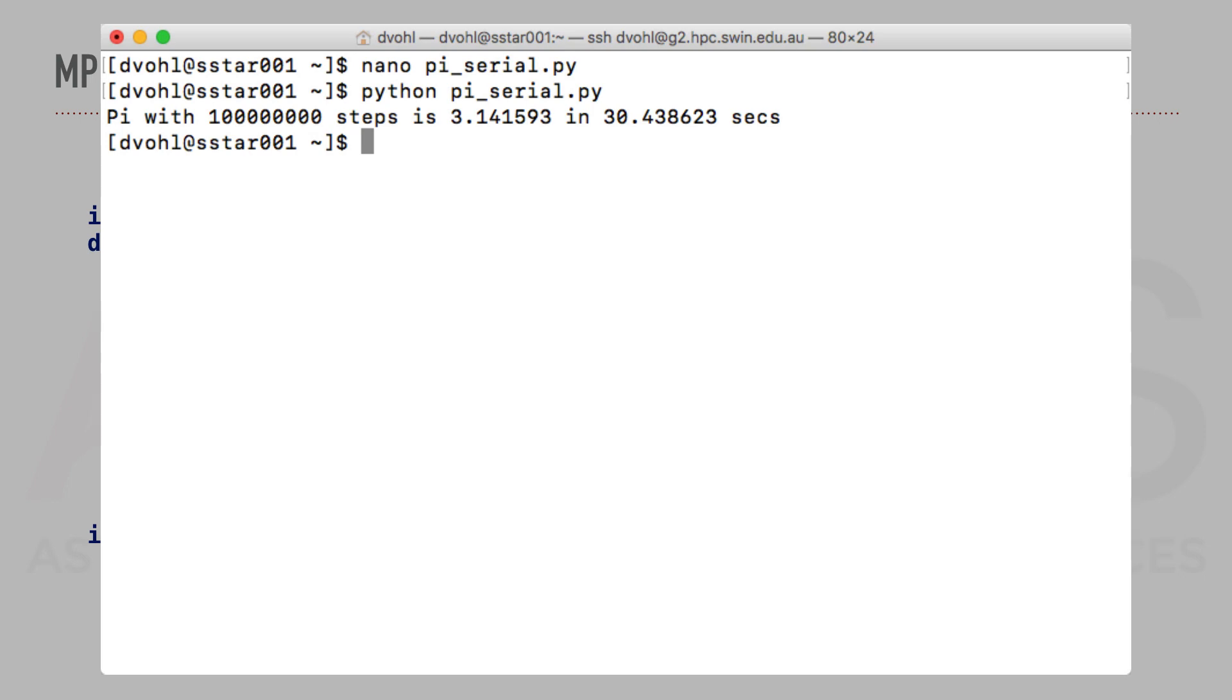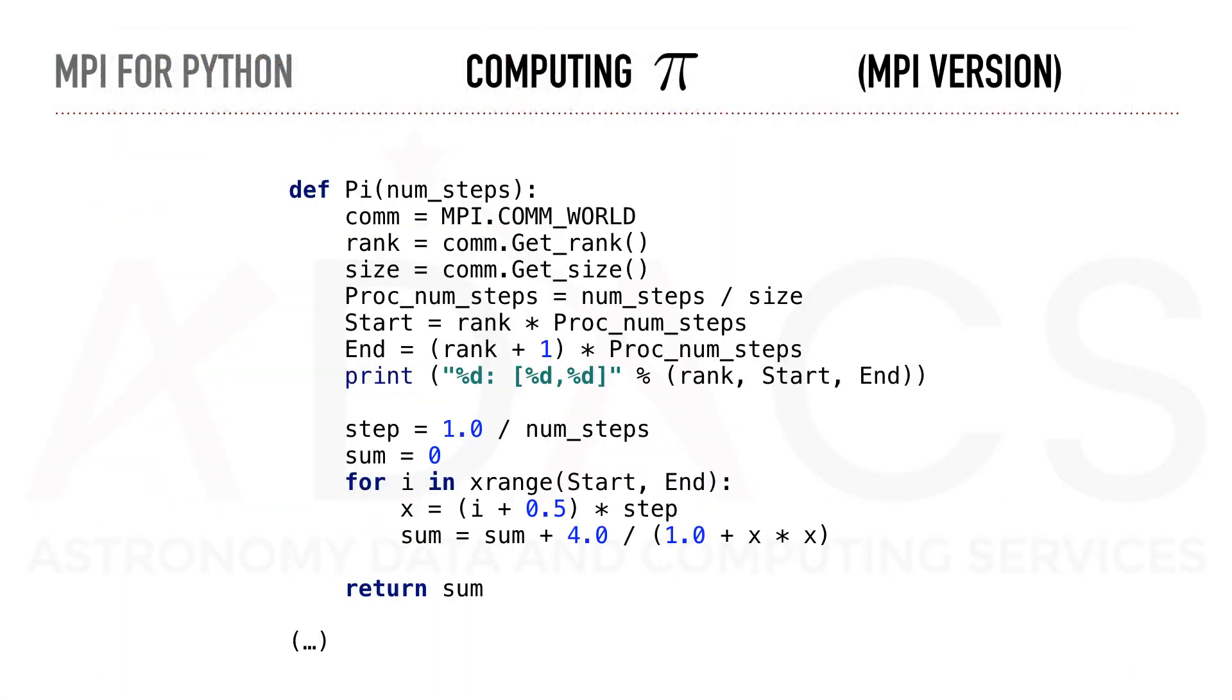In this case, it took about 30 seconds to compute on an interactive node on S star. Now let's build our MPI version.